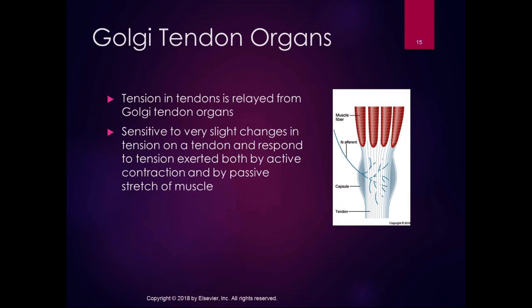We also have Golgi tendon organs. The Golgi tendon organ is a sensory ending that relays tension in the tendons. The Golgi tendon organs are the 1B fibers, and they are sensitive to very slight changes in tension on a tendon. They respond to tension exerted both by active contraction and passive stretch of the muscle. A lot of our conscious and non-conscious proprioception comes from the Golgi tendon organs.